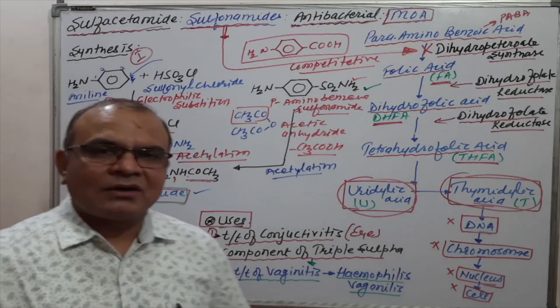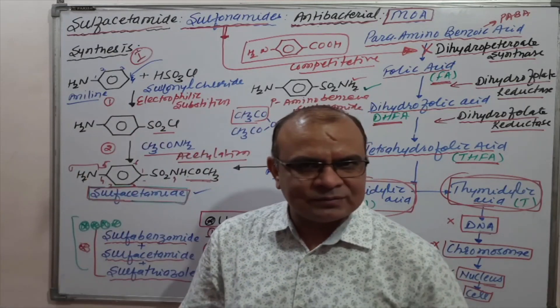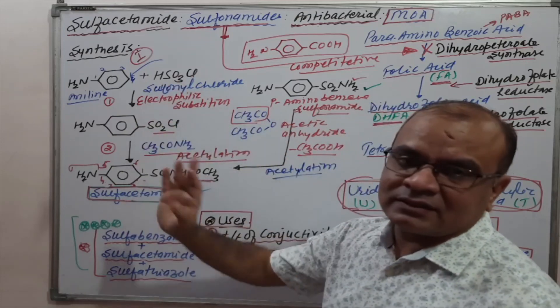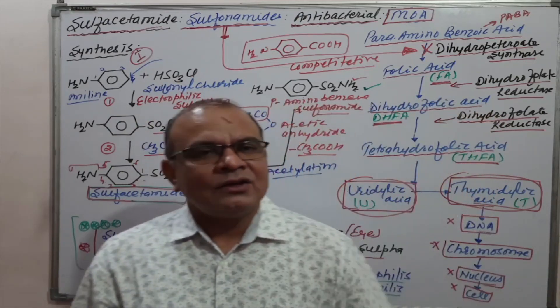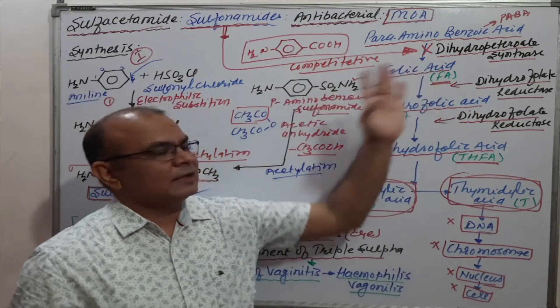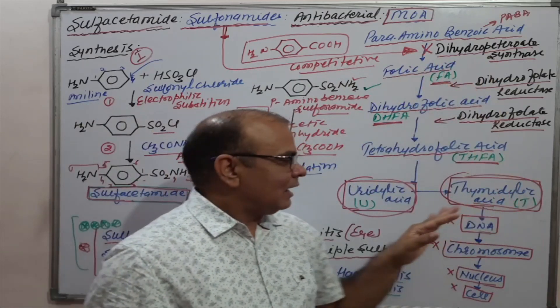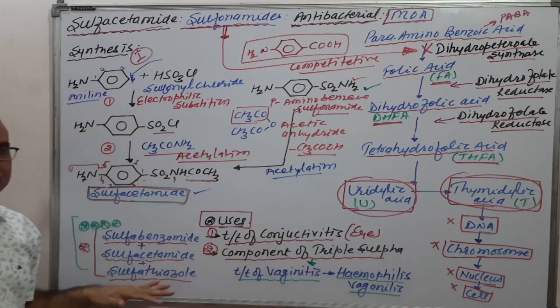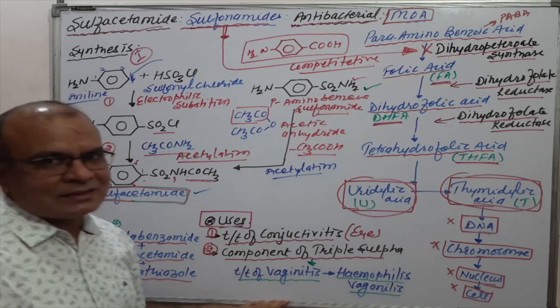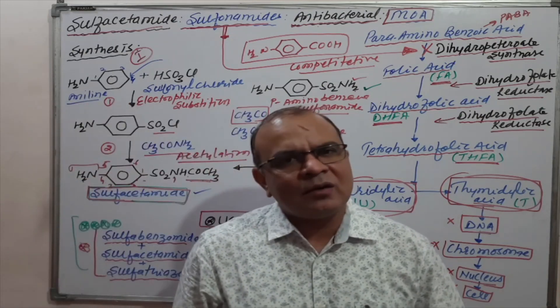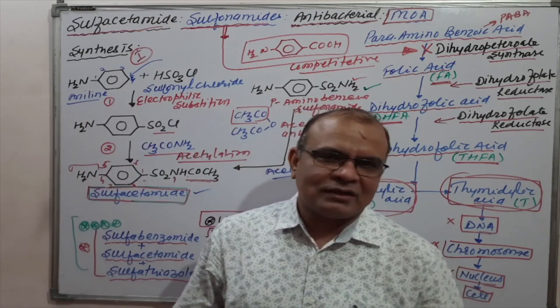Very simple reaction that is sulfacetamide. This is all about the synthesis, one step and two step synthesis. It is a competitive inhibitor of dihydropteroate synthase. Uses are conjunctivitis and as a triple sulfacetamide component for vaginitis. This is all about sulfacetamide.